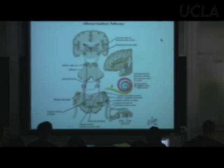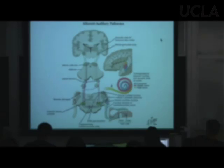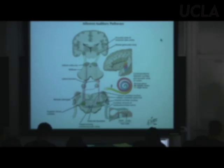Cell bodies of the superior olive send their axons rostral — towards the nose — in a bundle called the lateral lemniscus. You have two of them — the lemnisci. A lemniscus is a ribbon of axons going up.